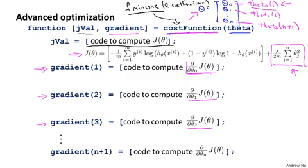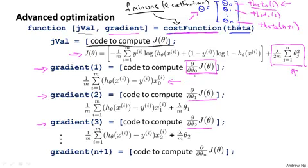And looking at these terms, this term over here we actually worked out on the previous slide. It's actually equal to this. It doesn't change because the derivative for theta zero doesn't change compared to the version without regularization. And the other terms do change.